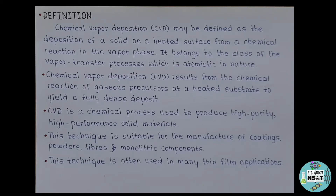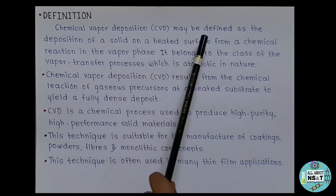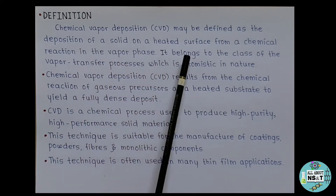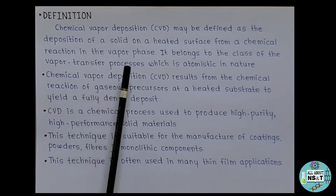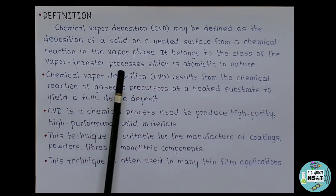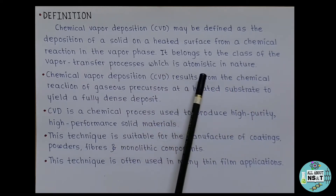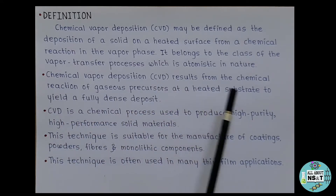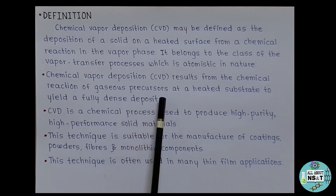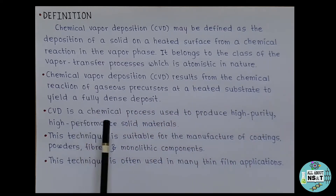Chemical vapor deposition may be defined as the deposition of a solid on a heated surface from a chemical reaction in the vapor phase. It belongs to the class of vapor transfer processes which is atomistic in nature, meaning that the deposition species are atoms, molecules, or combinations of these. CVD results from the chemical reaction of gaseous precursors at a heated substrate to yield a fully dense deposit.